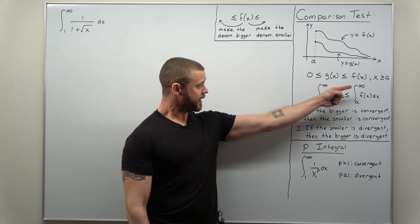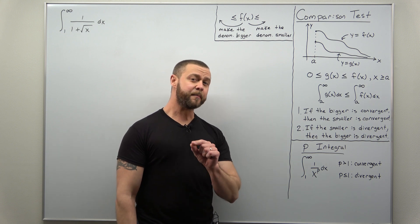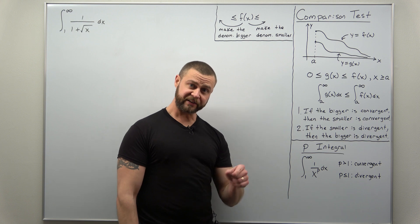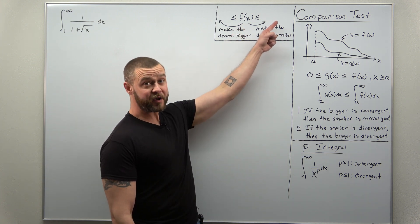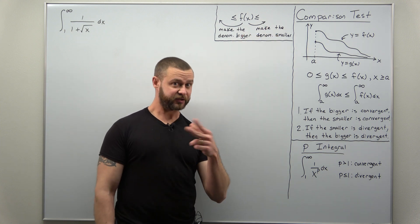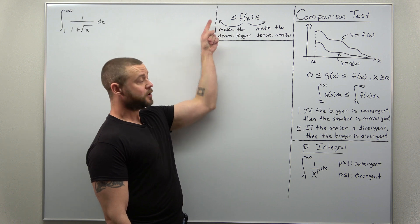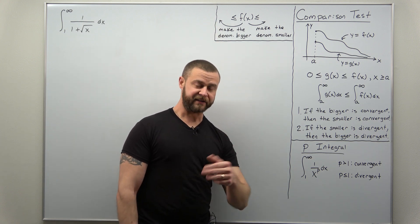First, in order to apply the comparison test you need to have an idea if you think your improper integral is convergent or divergent, because that's going to help guide you through looking for either a bigger improper integral if you think yours is convergent. If you think your improper integral is divergent, you would look for a smaller improper integral that's divergent.